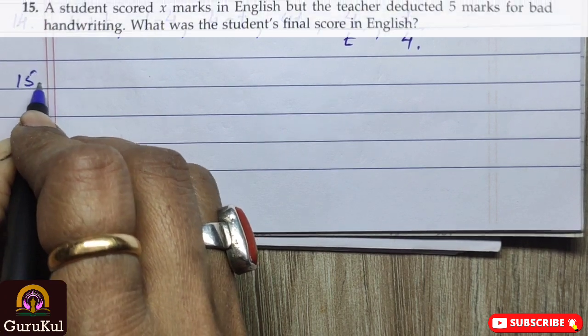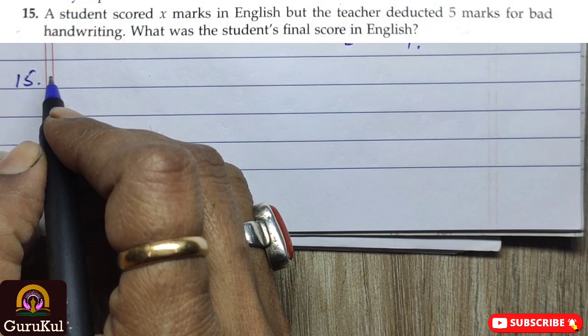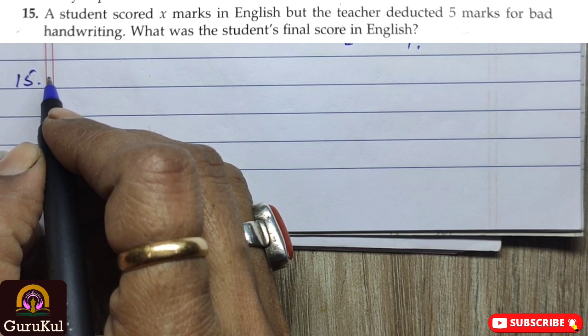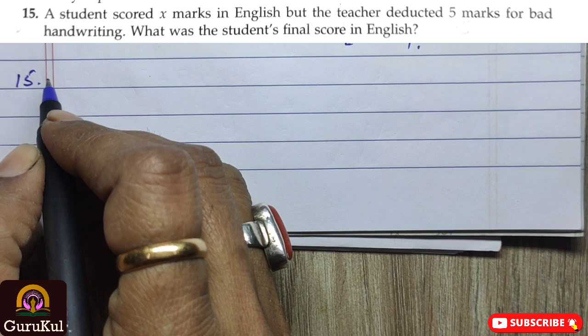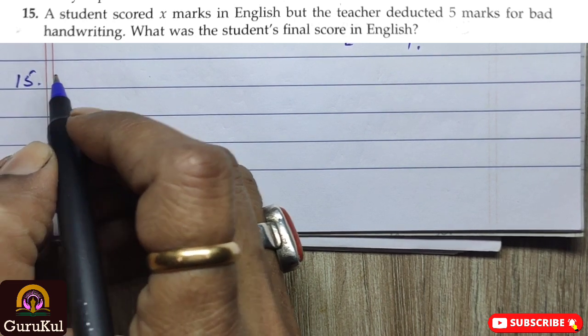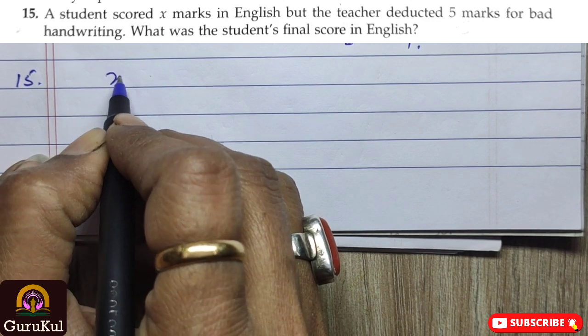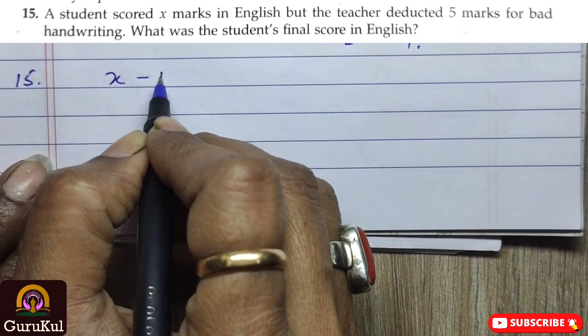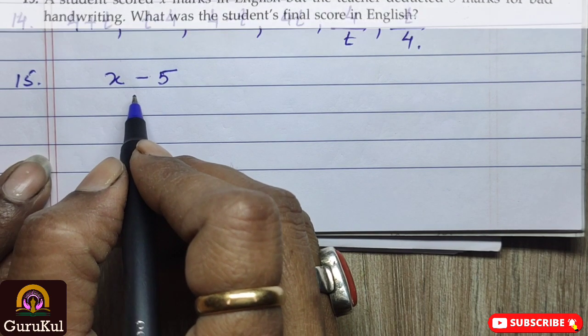Question number 15. A student scored x marks in English but the teacher deducted 5 marks for bad handwriting. So, what was the student's final score in English? Hence, so the marks obtained by the student was x where 5 marks was deducted for bad handwriting. So, this is the answer.